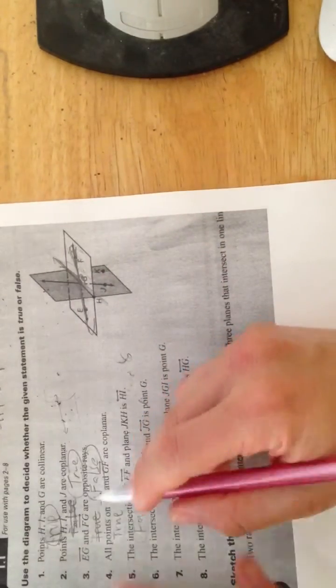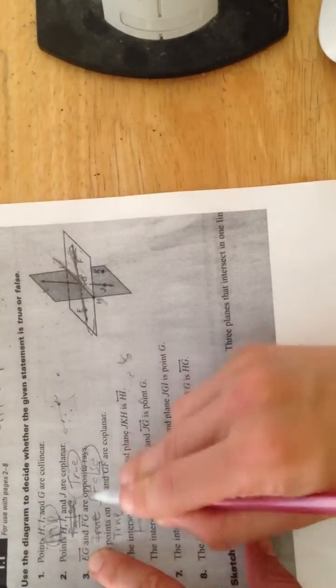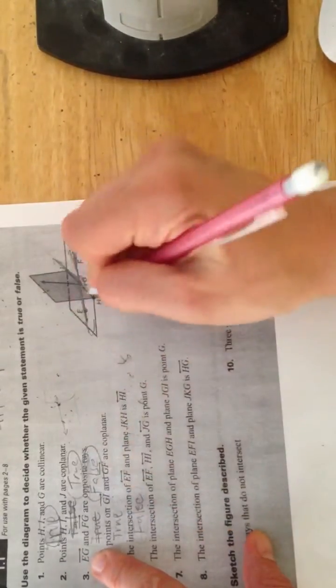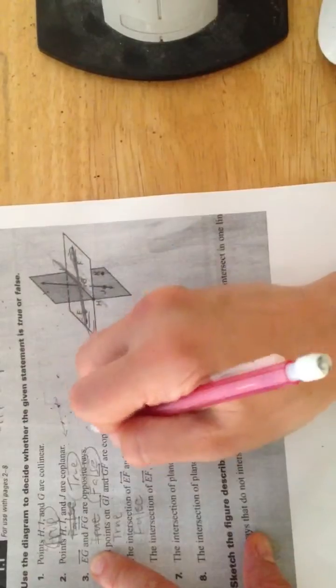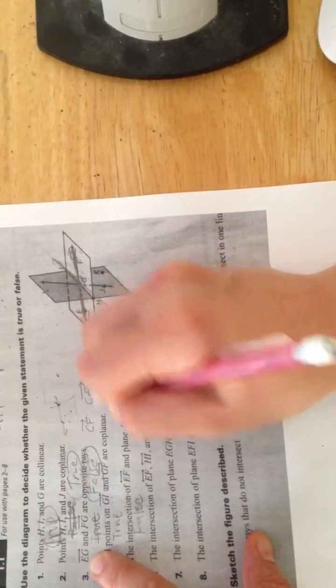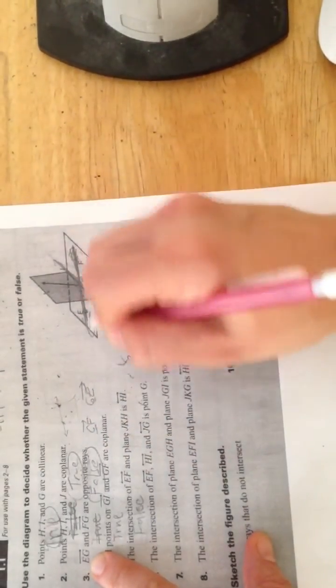Okay, so I got cut off last time. I think I was trying to describe if you wanted an example of what opposite rays were. You could do like GF and GE would be opposite rays, because they start at the same point and then go in opposite directions.